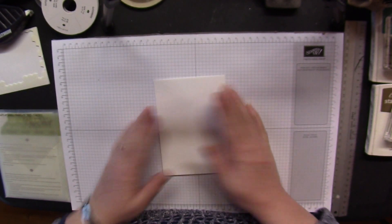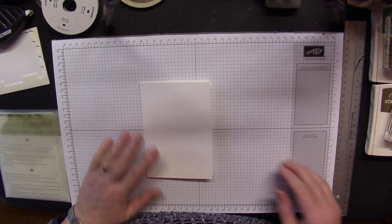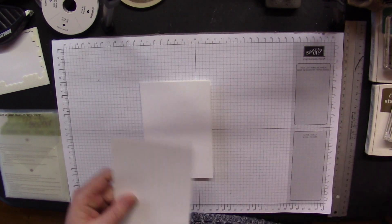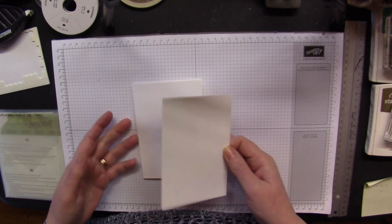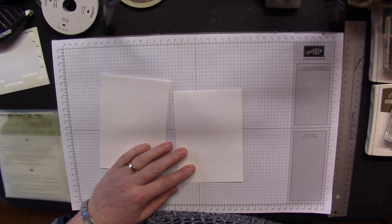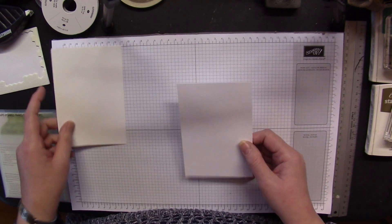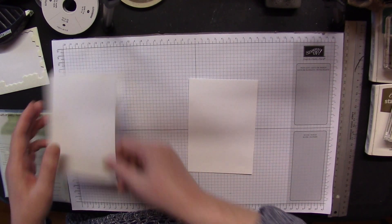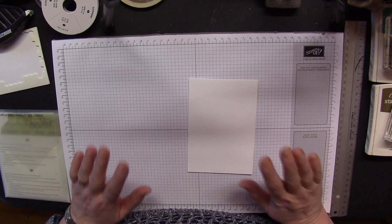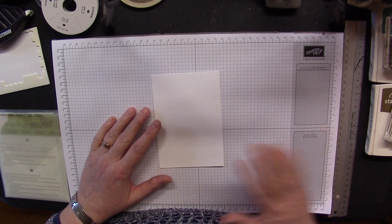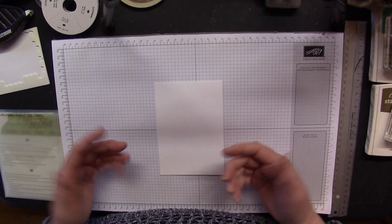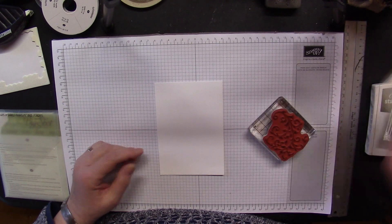It's all going to be white on white on white. We're going to mat onto a piece of Whisper White cardstock measuring 14.4 centimeters by 10.1 centimeters. We're going to be stamping on this, so I'm going to pop my card base to one side. The last thing you want is to end up with ink contaminating your cardstock and having to start again completely.